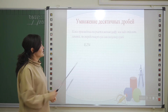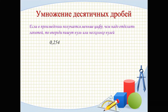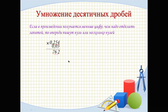Let's look at an example: 0.254 × 0.03. We get: 4 × 3 = 12, write 2, carry 1. 5 × 3 = 15, plus 1 = 16, write 6, carry 1. 2 × 3 = 6, plus 1 = 7. We count the decimal places: 3 in the first number and 2 in the second — 5 total. We don't have enough digits, so we add two zeros and place the decimal point, writing 0 at the start. The result is 0.00762.